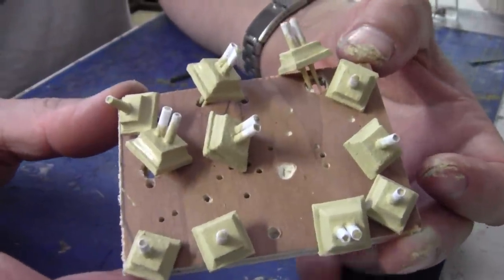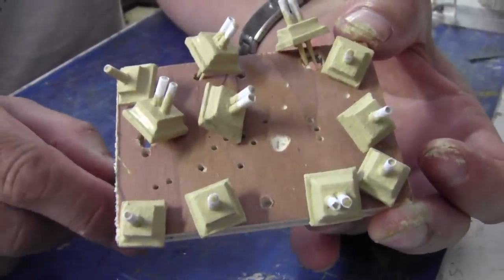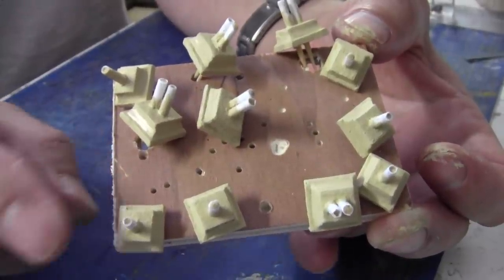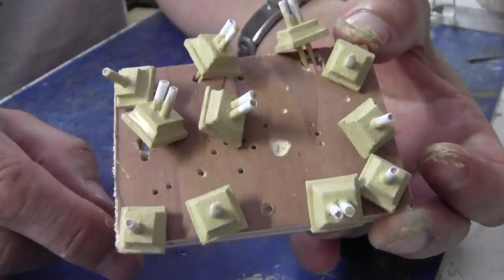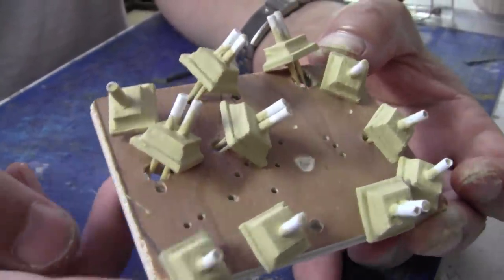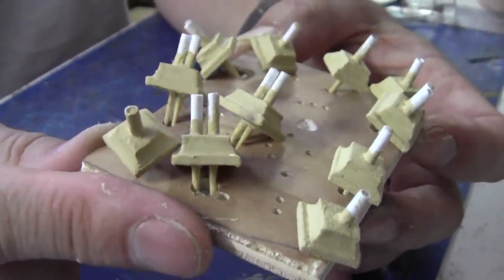Right, that's the chimney capping stones painted. They've had two coats. They're still a little bit wet, so I'll let them dry a little bit longer before we do the actual pots themselves. As you can see, the edges have come up really sharp and I think that's the effect of the superglue.